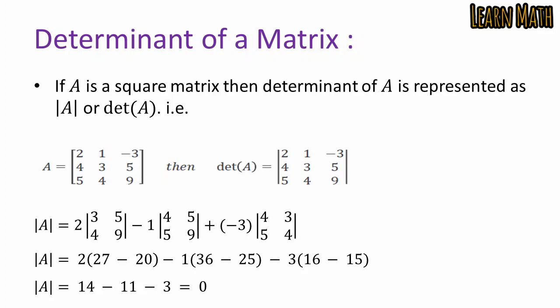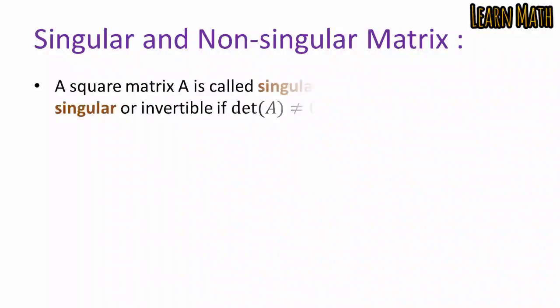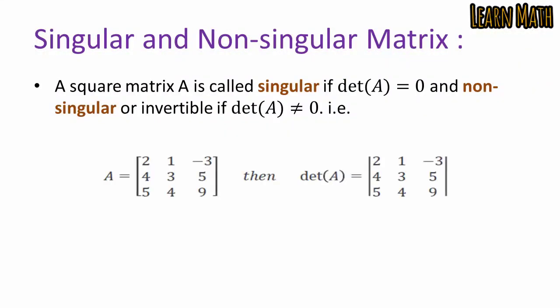A square matrix A is called singular if det(A) = 0, and non-singular (or invertible) if det(A) ≠ 0. From the previous example, we proved that det(A) = 0, so the given matrix A is a singular matrix. If det(A) ≠ 0, then the matrix is called a non-singular matrix.